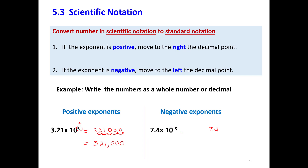Here the exponent is negative, so we need to move to the left 3 places. We focus on this value: 1 place, 2 places, 3 places — here is the decimal point. Then the answer is 0.0074. Some students don't like to write the leading zero, but it's good practice to avoid confusion.